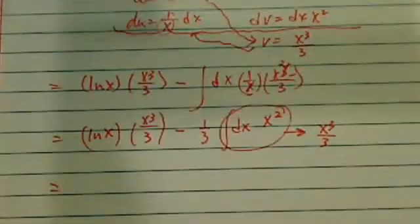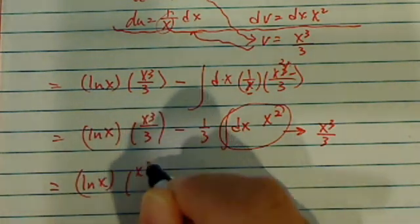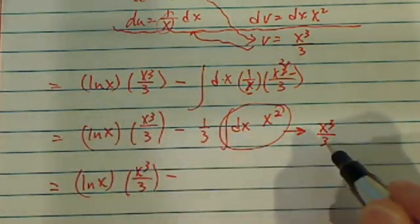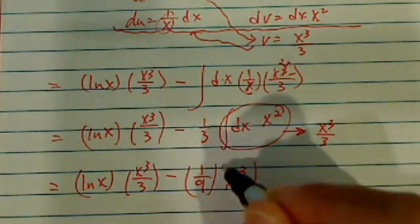One more time, then we're done. Natural log of x, x cubed over 3 minus 3 times 3 on the bottom is 1 over 9. And then I have x cubed on there.